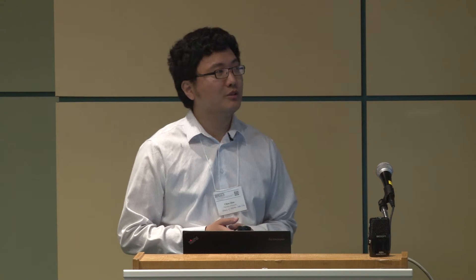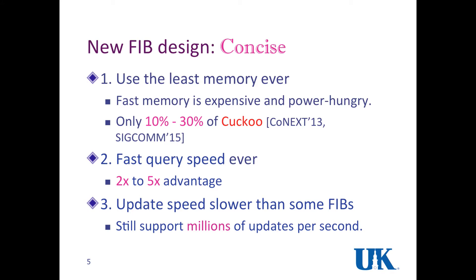Our new FIB design is called concise. The good properties of concise is that it uses very small memory for the FIB. Memory size is very important because fast memory is expensive and power hungry in devices. Compared to existing results like Cuckoo, we use only 10% to 30%. The second good property is that our query speed, which is the lookup time, is very short and the query speed is very fast. Compared to existing results, it achieves like two times to five times faster.